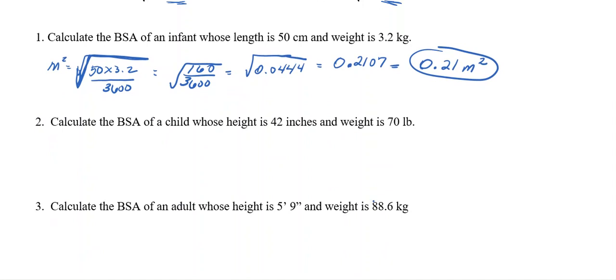So the next example, I have a child whose height is 42 inches and weight is 70 pounds. So I'm going to use the BSA formula for the household. So I'm going to take my 42 inches, multiply it times my weight of 70 pounds, and divide it by 3,131.